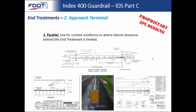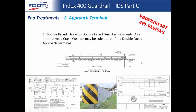The second option is the parallel type — use this for curb conditions, to keep the face of the approach terminal as close to the curb as possible so the curb has little effect on the vehicle and it performs as close to crash-test conditions as possible. You might also use this when clearance is limited, since a flared terminal would require additional right-of-way. The third type is the double-faced approach terminal — use it with double-faced guardrail; it's crash-worthy and the least expensive compared to a crash cushion, though a crash cushion may be substituted.